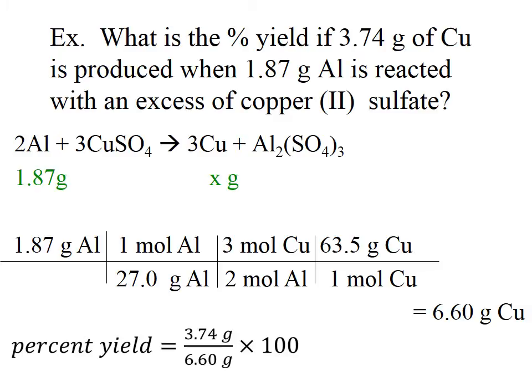To find our percent yield, we take our actual yield — which is 3.74 — divided by our theoretical, then multiply by 100.